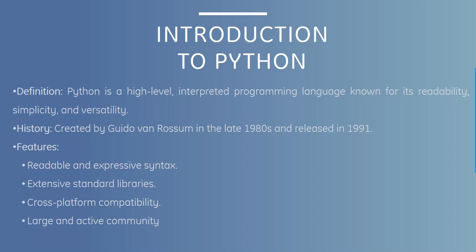So what is Python? Python is a high-level interpreted programming language known for its readability, simplicity, and versatility. It was created by Guido van Rossum in the 1980s and released in 1991. Its features include readable and expressive syntax, extensive standard libraries, cross-platform compatibility, and a large and active community.